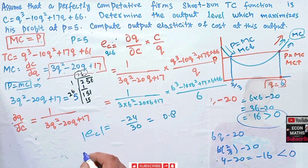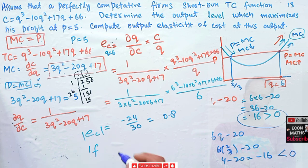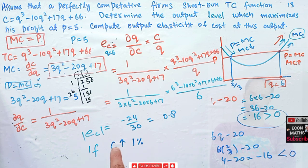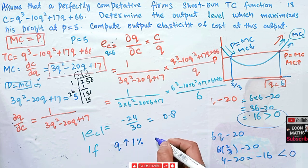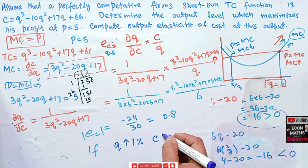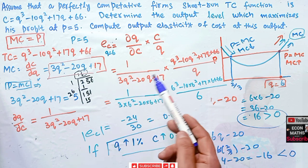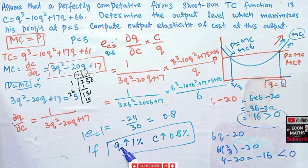So the output elasticity of cost is 0.8. This means if output is increased by 1%, cost will also increase by 0.8%. In other words, if output increases by 1 unit, cost will increase by 0.8 units. This is the meaning of the output elasticity of cost.